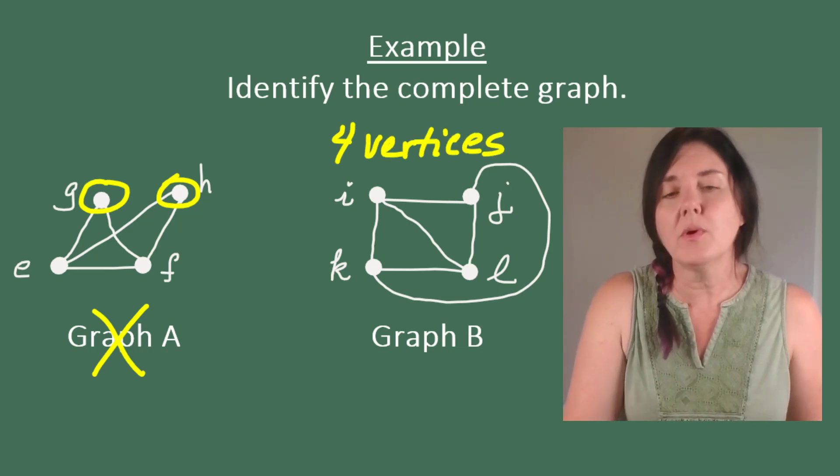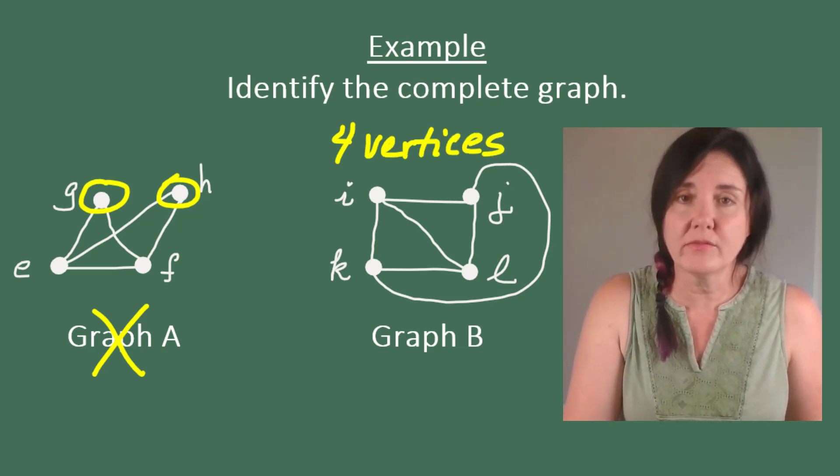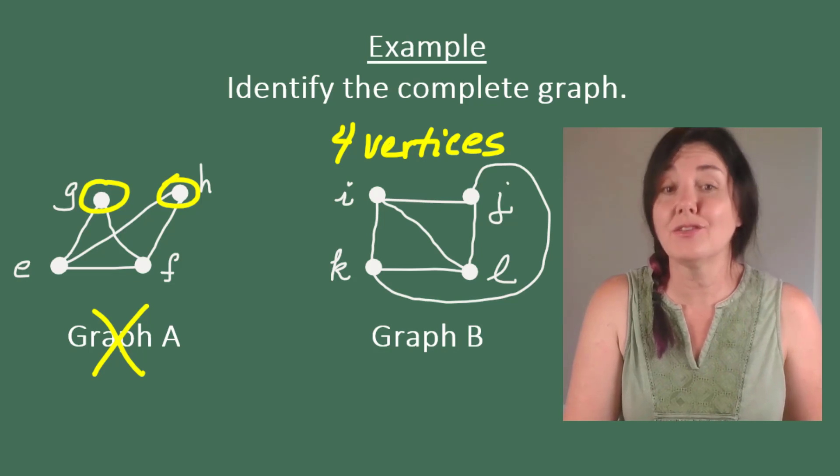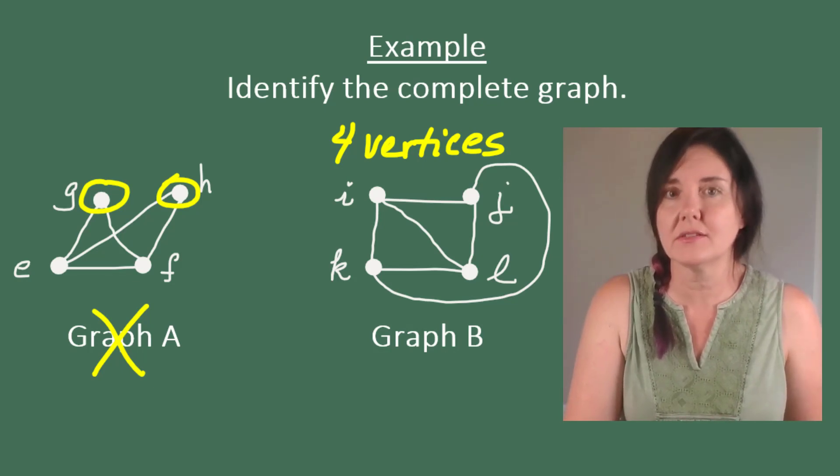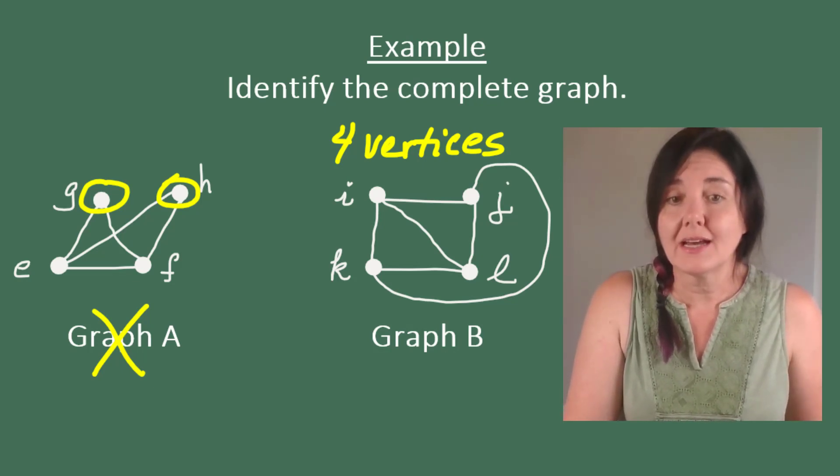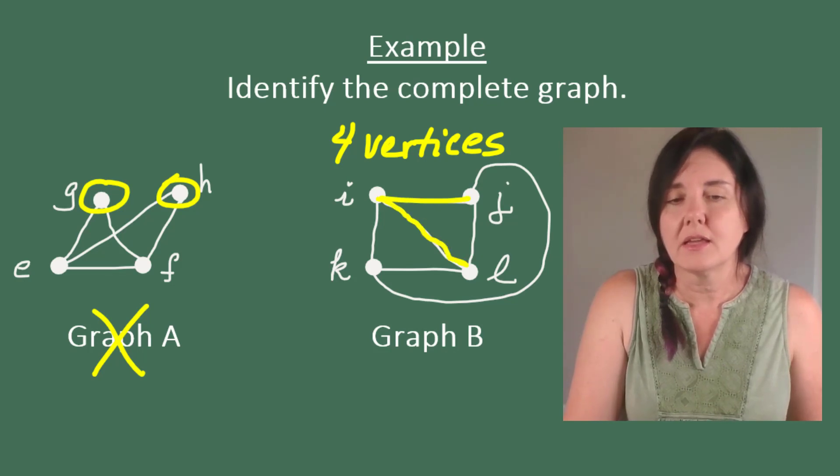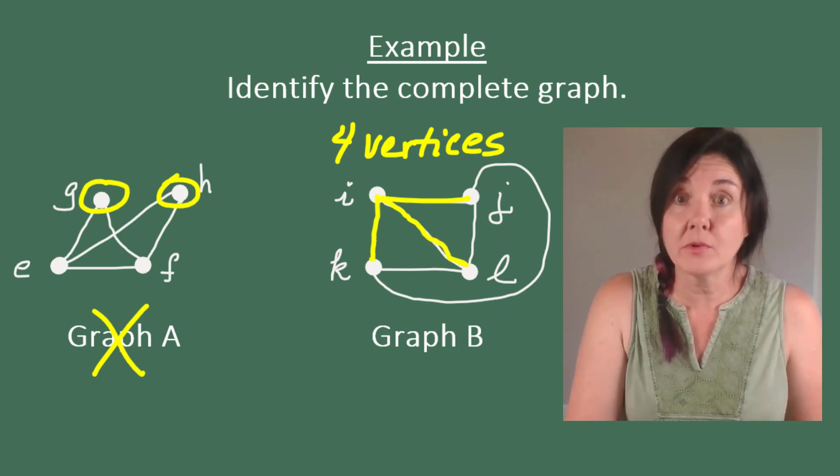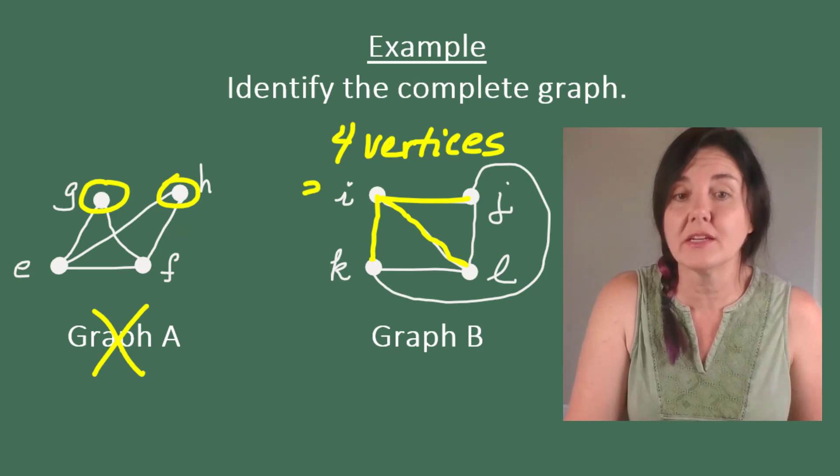Another way to approach the problem would be to make an observation that there are four vertices. And the reason that that's important is because each one of the vertices has to be connected to three other vertices. So notice that vertex I is connected to J, L, and K. In other words, vertex I has degree three.